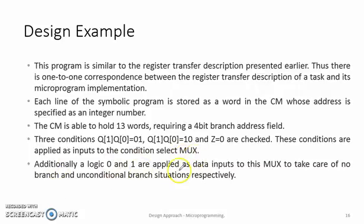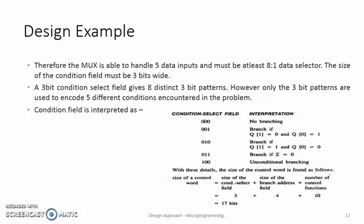Additionally, a logic 0 and 1 are applied as data inputs to this MUX to take care of no-branch and unconditional branch situations respectively. Therefore, we find that a MUX is able to handle 5 data inputs and it must be at least 8 to 1 multiplexer. The size of the condition select field must be 3 bits wide.